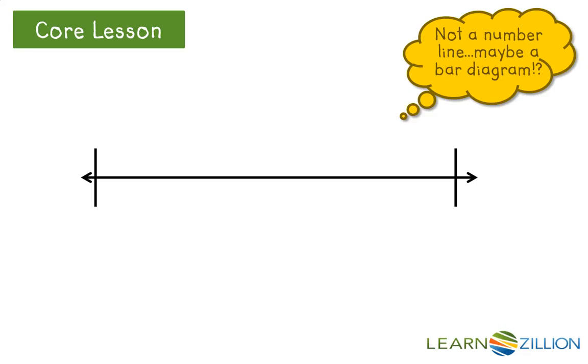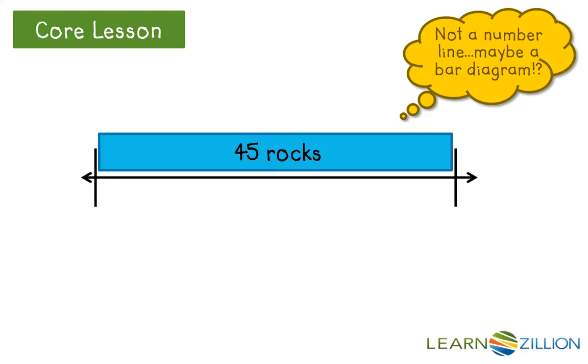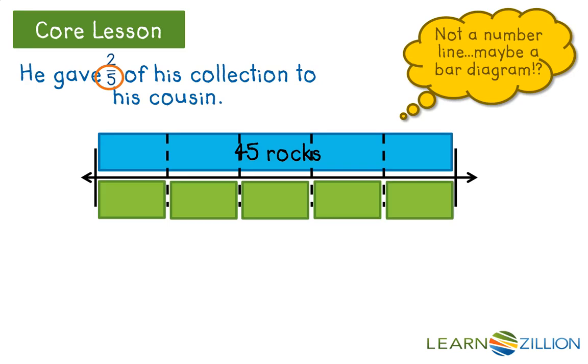My total is 45, so I'm going to draw a full bar to represent his total of 45 rocks. Since the fraction they gave me was 2 fifths, and I know the denominator represents the number of pieces the total's divided into, I'm going to divide my total bar into 5 equal pieces.